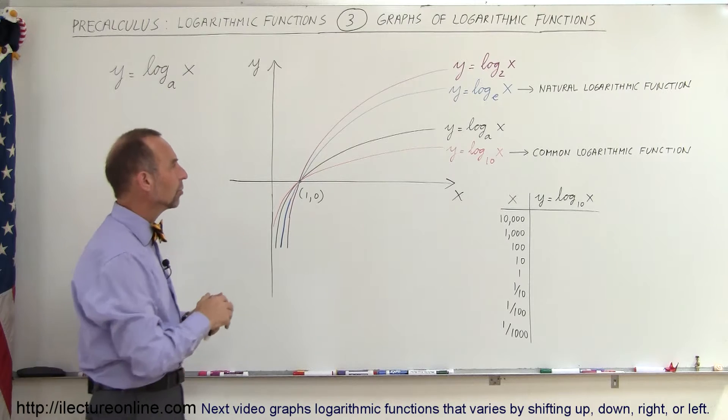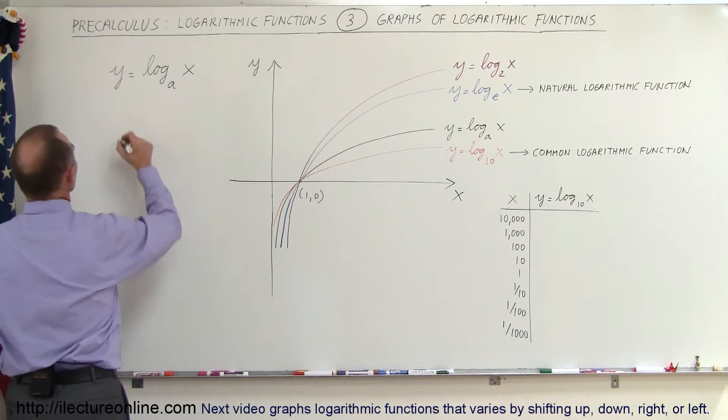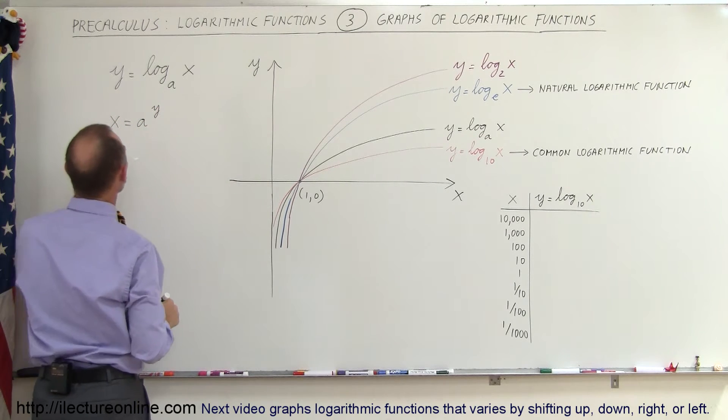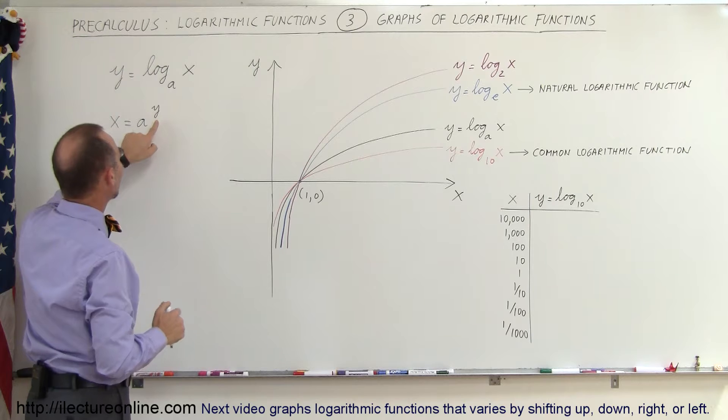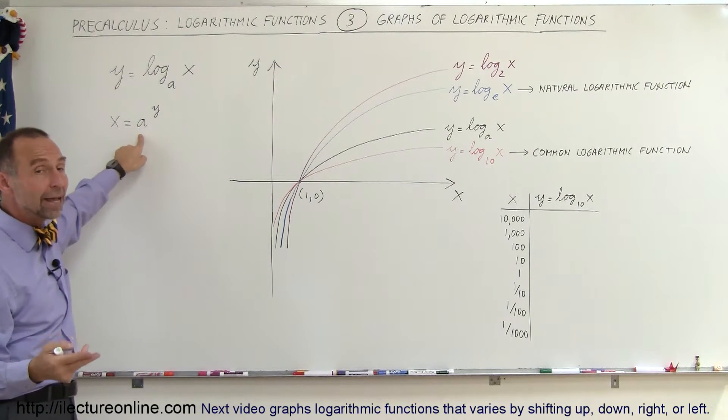Why is that? Well, it turns out when you look at the logarithmic function, and remember, this can be written as x is equal to a to the y power, the only way to get, well, if you plug in a 0 for y, you get 1 for x, regardless of the value for a.